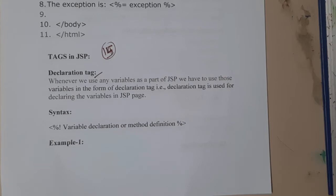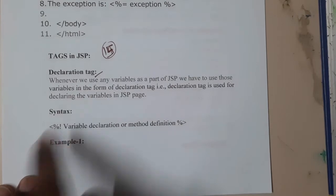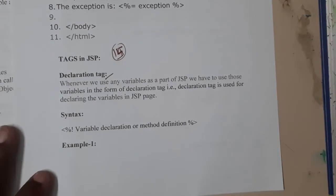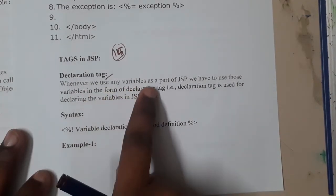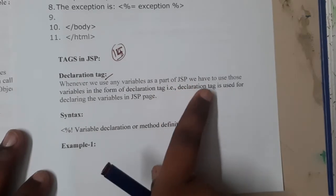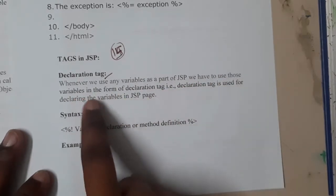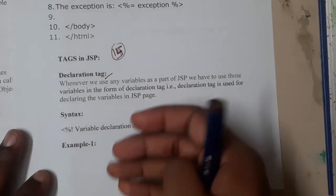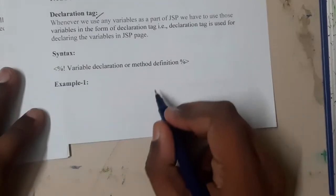The first type is the declaration tag. From the name, you can identify that it is declaring something like variables and their values. Whenever we use any variable as a part of JSP, we have to use those variables in the form of declaration tag.